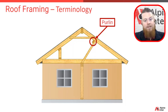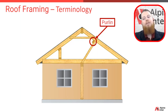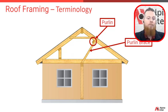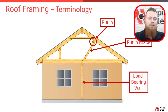Purlins are framing pieces that run parallel to the eaves in most cases, joining rafters together and providing a spot for the purlin braces, which generally help transfer or shear the load of the roof down onto a load-bearing wall, usually on the inside of the structure.